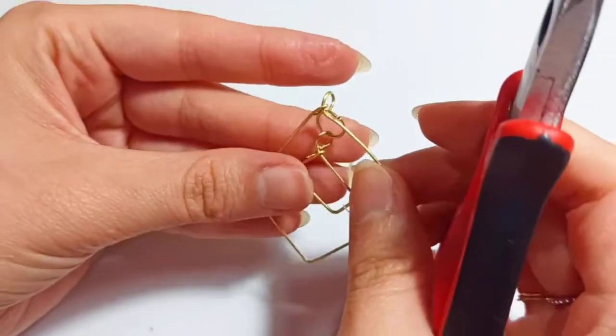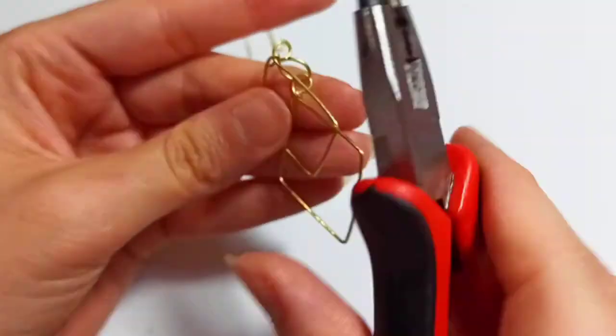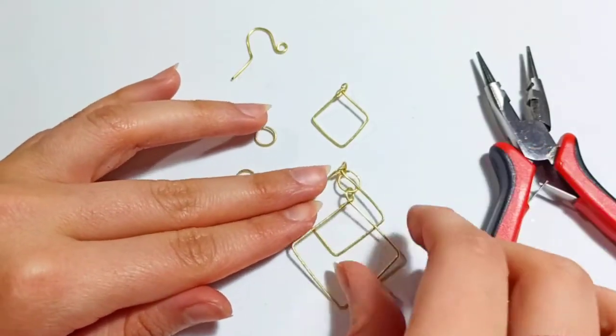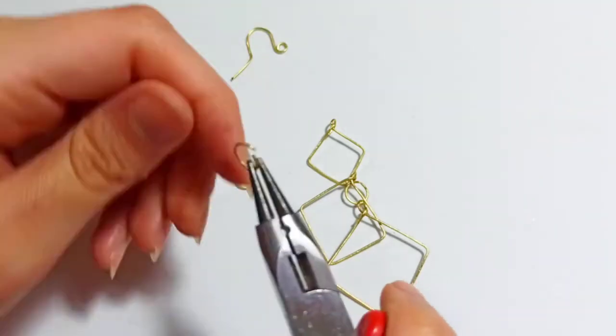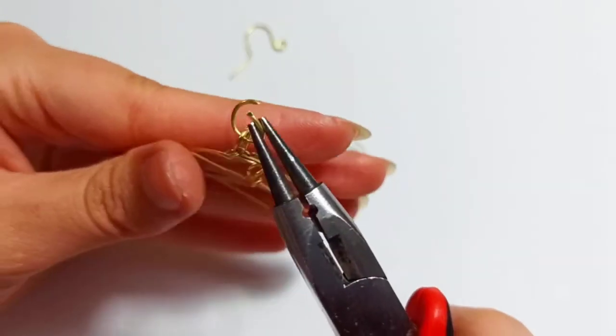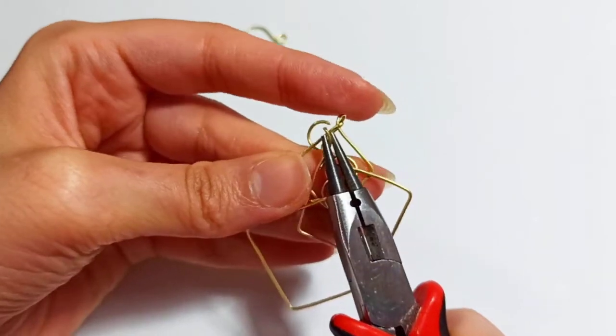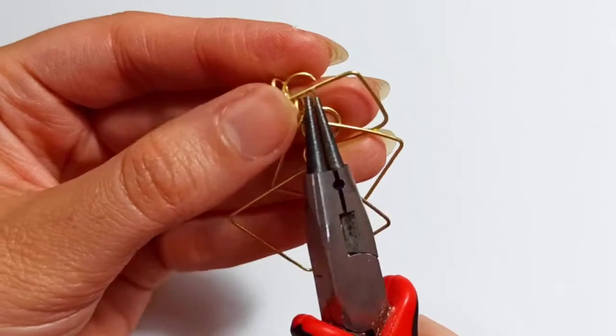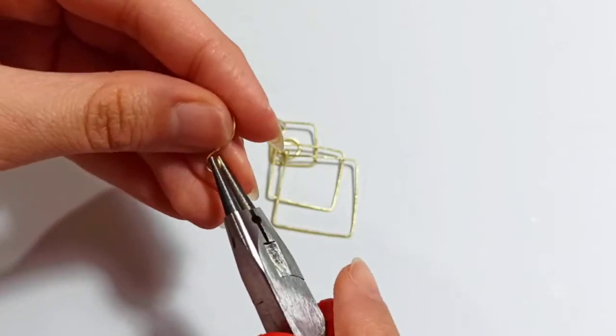You should be careful not to leave any space in the jump ring or these loops. We continue the same for the smaller square: insert the loop, put it on the smallest square, insert the jump ring, and close it.